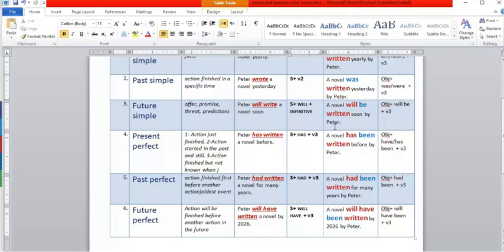For present perfect, we use it as an action that just finished, or an action started in the past and still exists, or an action finished but not known when. When you say 'I have tried sushi before,' you don't remember when you tried it. 'Peter has written a novel before.' To make it passive voice, the form is subject plus has or have plus verb 3. But to make it passive, use object, have or has according to the object—singular or plural—then been plus verb 3: 'A novel has been written before by Peter.'